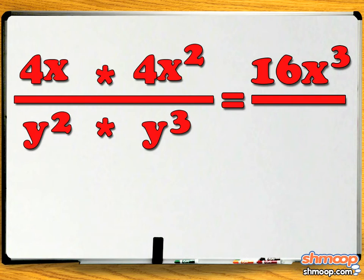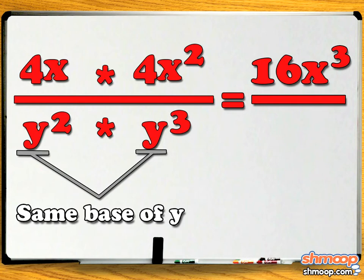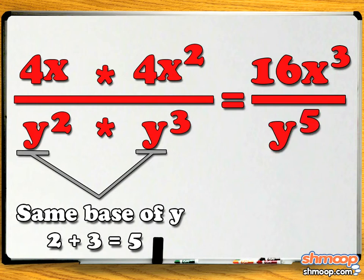Remember that we multiply two terms with the same base, and we can add the two exponents, in this case, the 2 and 3, to get y to the fifth.